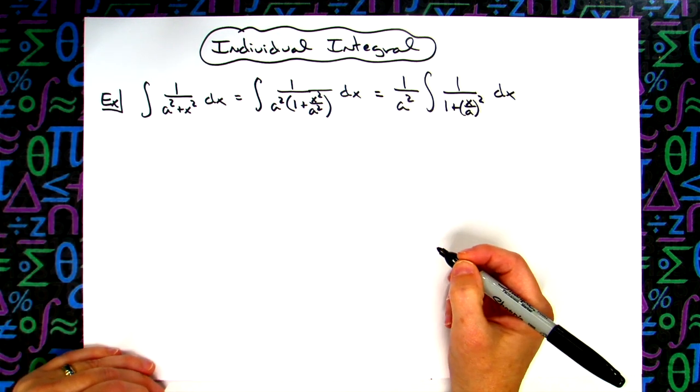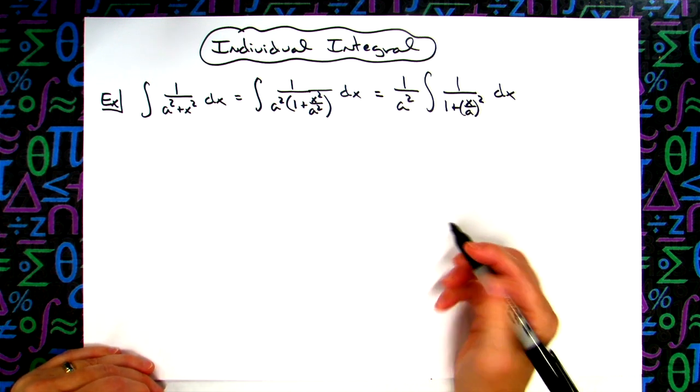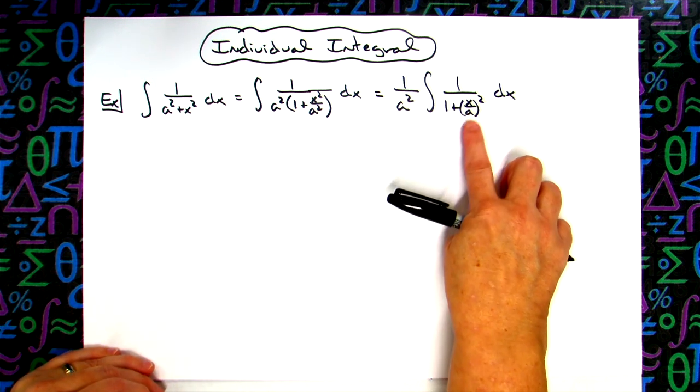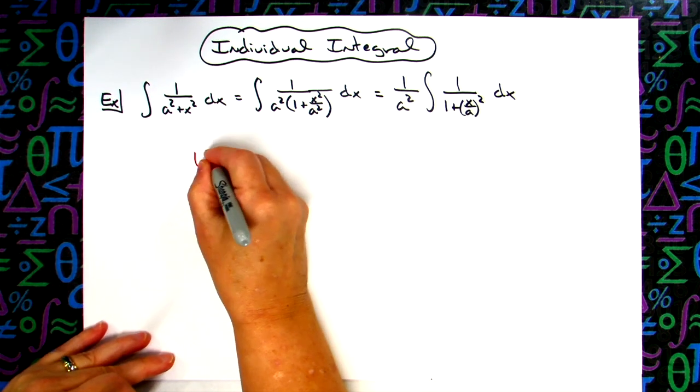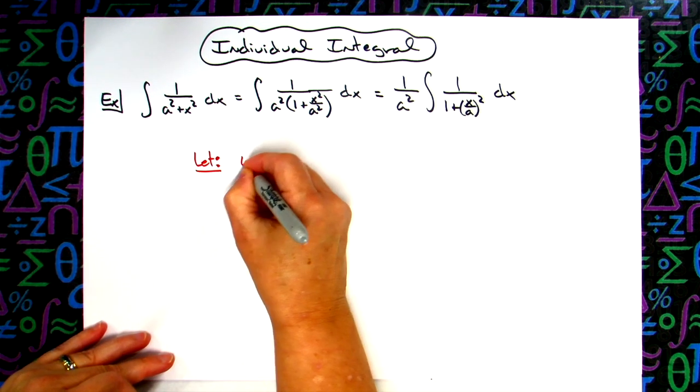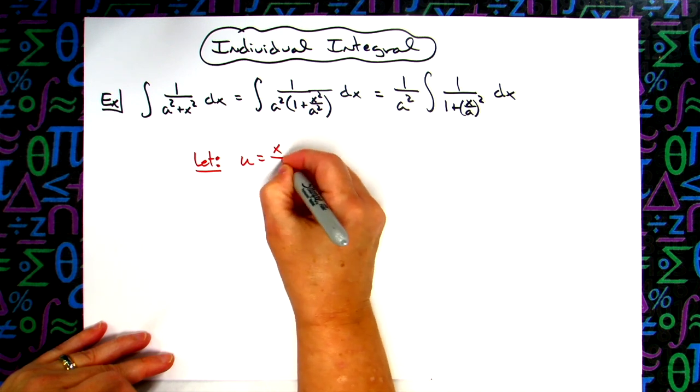All right, now at this point I'm ready to do a straightforward u substitution. I'm going to let my u be that x over a. So I'm going to have, let u equal x over a.